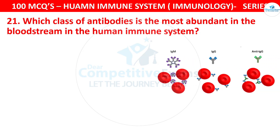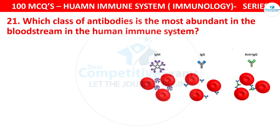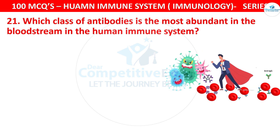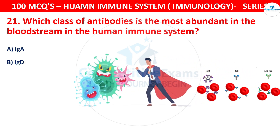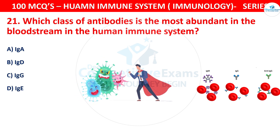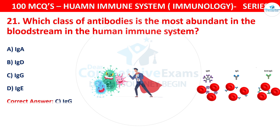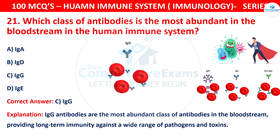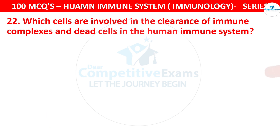Question 21: Which class of antibodies is the most abundant in the bloodstream of the human immune system? Your options are IgA, IgD, IgG, or IgE. The correct answer is C, that is IgG. IgG antibodies are the most abundant class of antibodies in the bloodstream, providing long-term immunity against a wide range of pathogens and toxins.